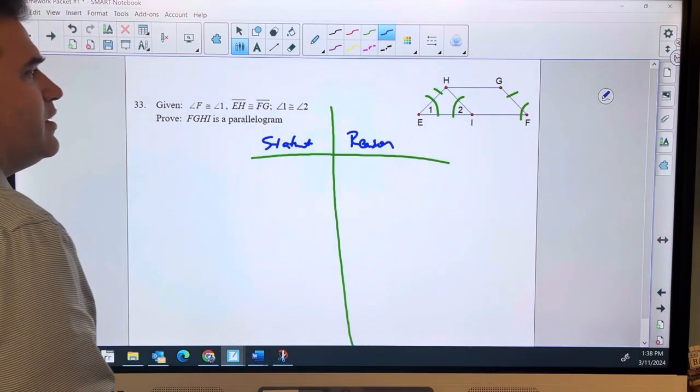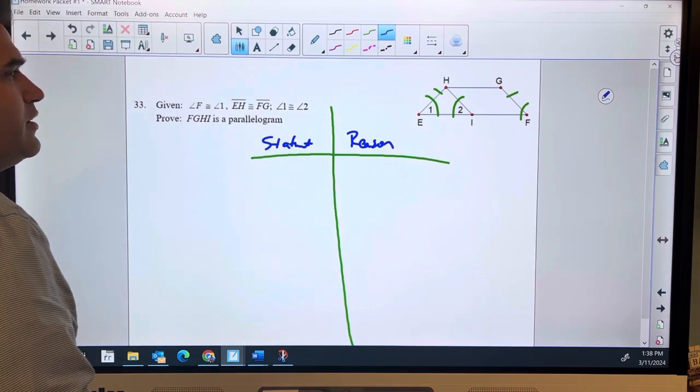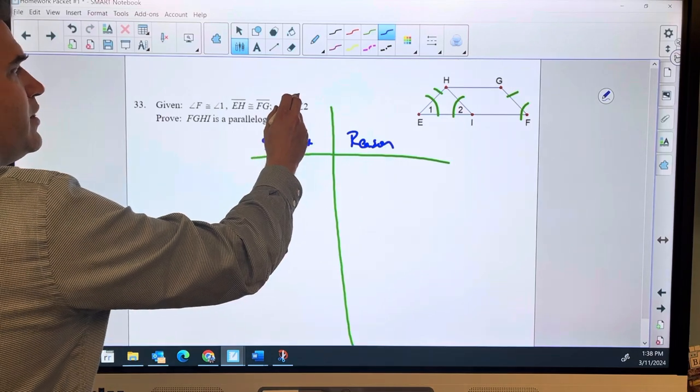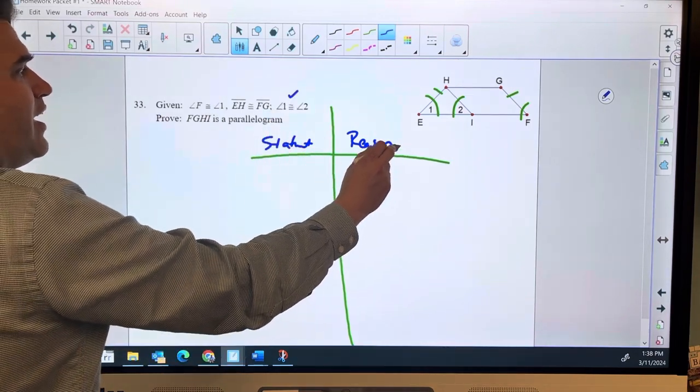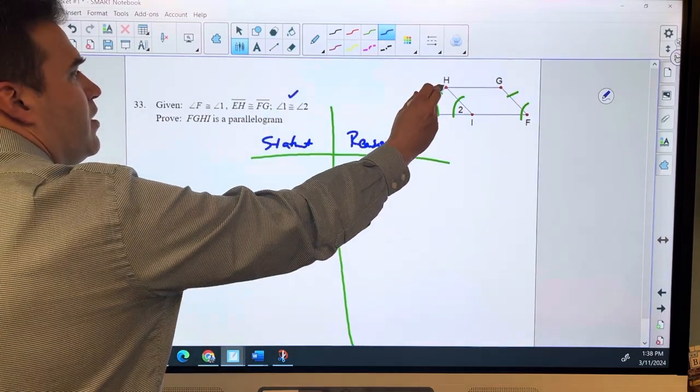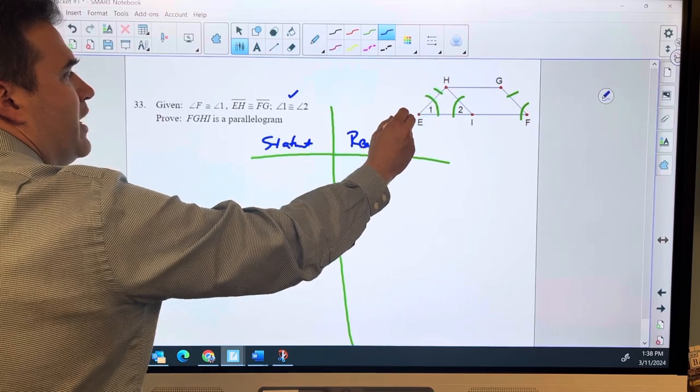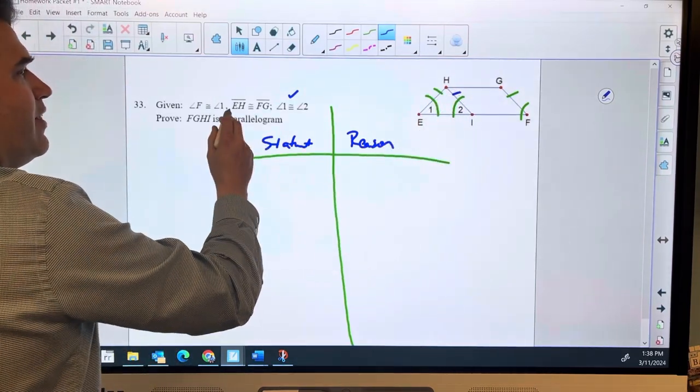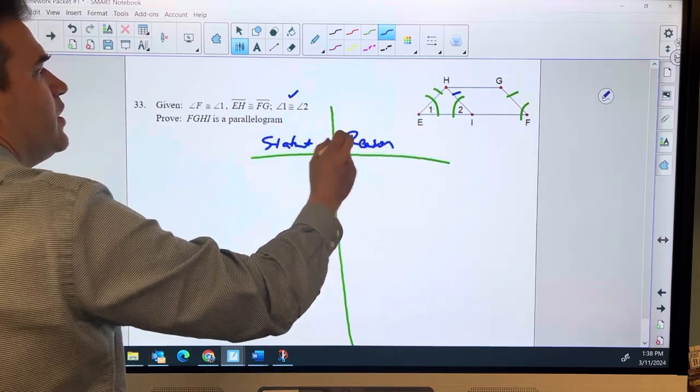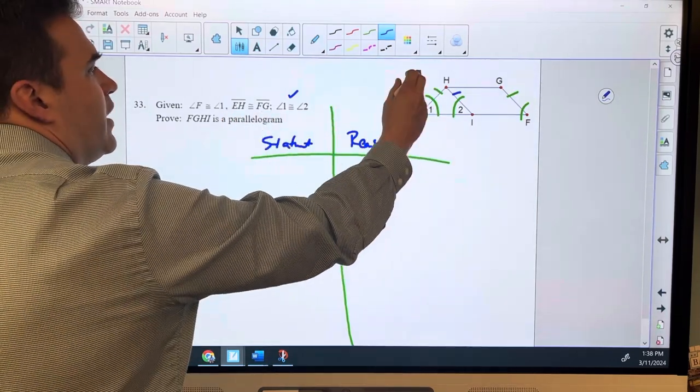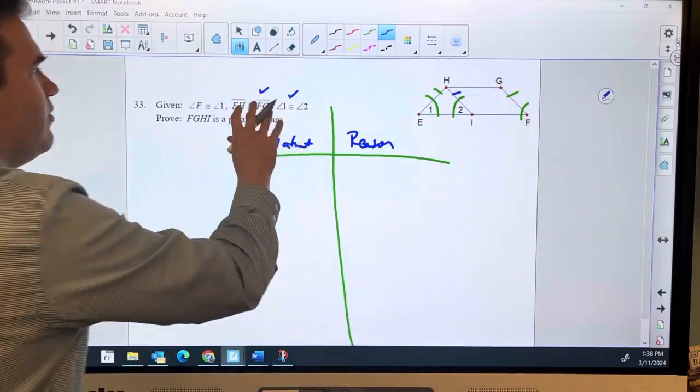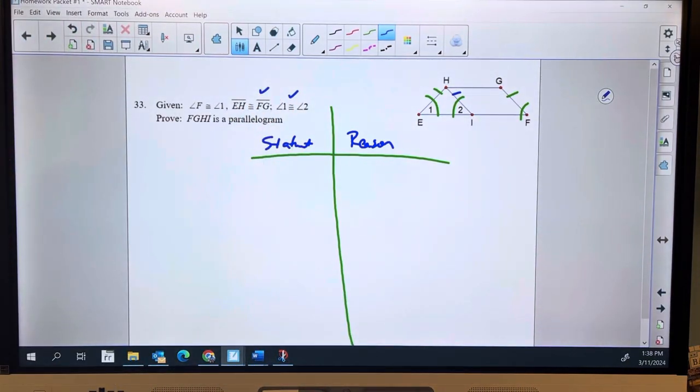So to get congruent, I need angle 1 congruent to angle 2, which is right there, and then that gives me HE is congruent to HI, or I'll call it EH, and that gives me HI is congruent to FG. So just those two givens are the only two givens that I need to get to my congruency.